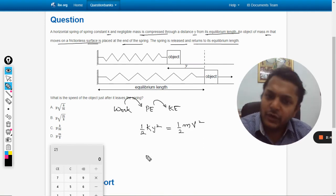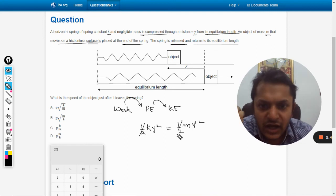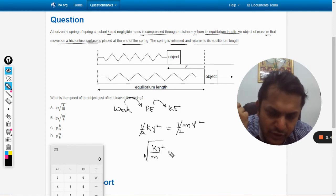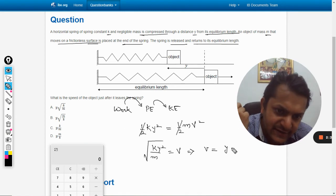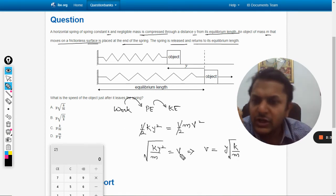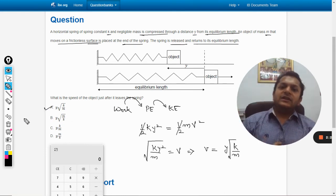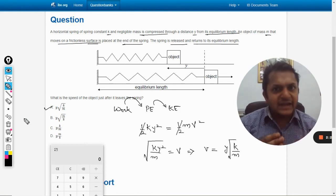From here we will find the velocity. Half and half cancels out, so it will be k y squared by m. Square root is equal to v, so this implies v is y square root of k by m. So accordingly, the answer should be a.